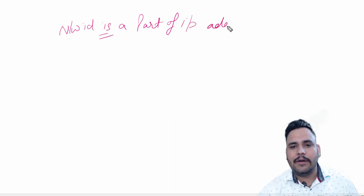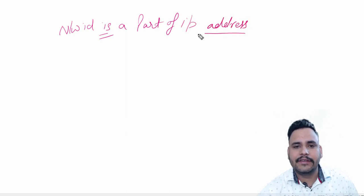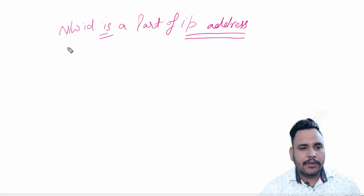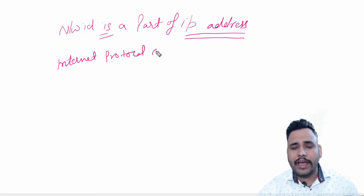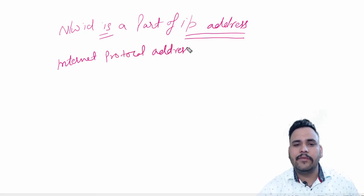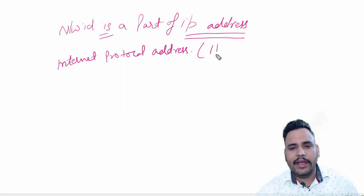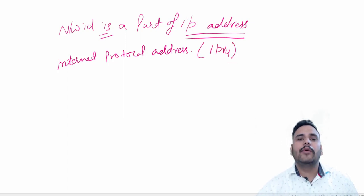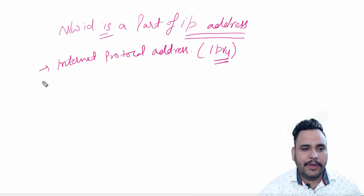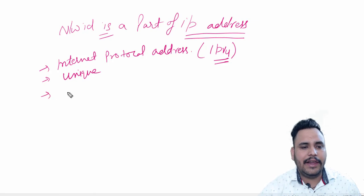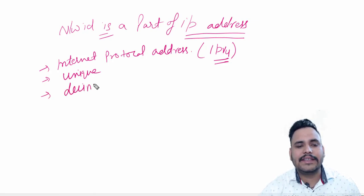So our today's topic is IP address. IP address is Internet Protocol address. We have two types of IP addresses: IPv4 and IPv6. But today I am going to discuss about IPv4; after this topic we will discuss about IPv6. An IP address is your unique address, and it is in the form of decimal because computers support decimal language.